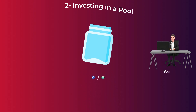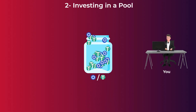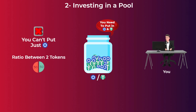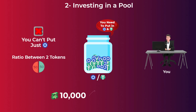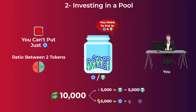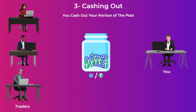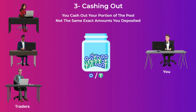The next point is that if you want to invest some tokens in a pool, you need to put in both tokens — you can't deposit just one. You also need the ratio between the two tokens to be 50-50. For example, if you have $10,000 to invest into a LINK/Tether pool, you need to put in $5,000 in Tether and $5,000 in LINK tokens, which may equal 500 LINK tokens. The third and most important point is that when you cash out, you receive your percentage of the pool, not the same amounts you initially deposited.